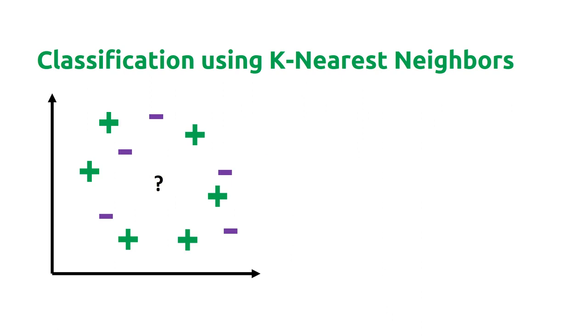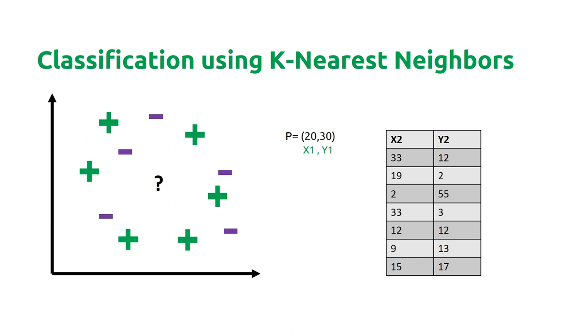Let us assume that since it is a two-dimensional space we can easily say that this new point might be having random coordinates, X1 and Y1, for X axis and Y axis respectively. And let us assume that all the other points in our data space also had some coordinates. I am representing them with these numbers. These numbers have nothing to do with the diagram, I have just written them for the sake of example.